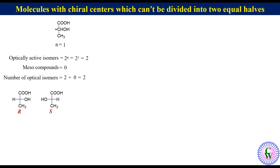Another example is 3-chlorobutan-2-ol. It cannot be divided into two equal halves and has two chiral centers. So here n is equal to 2. The number of optically active isomers will be equal to 2 raised to the power n, which equals 2 raised to the power 2, which equals 4.